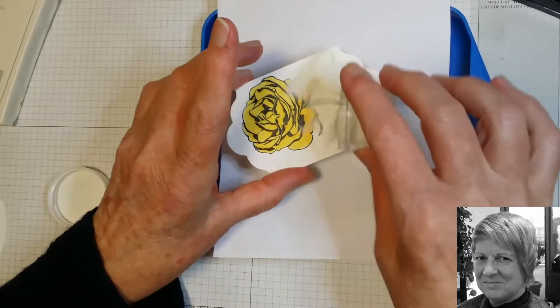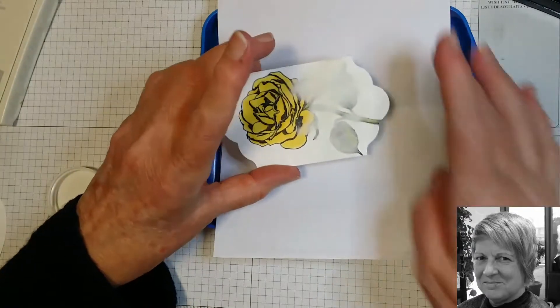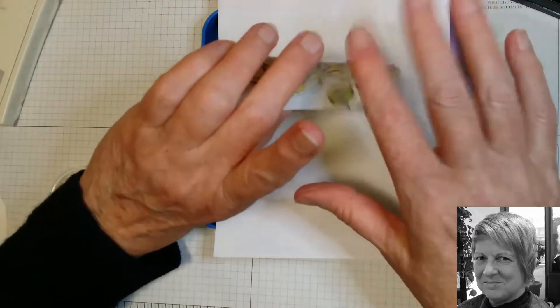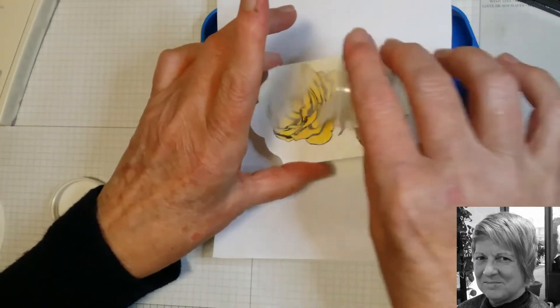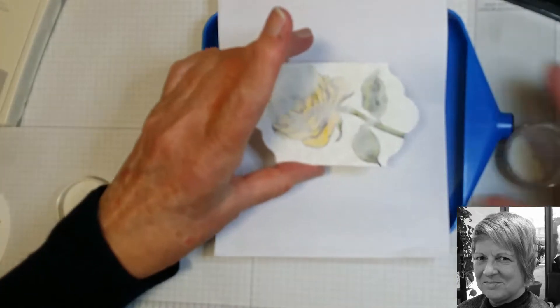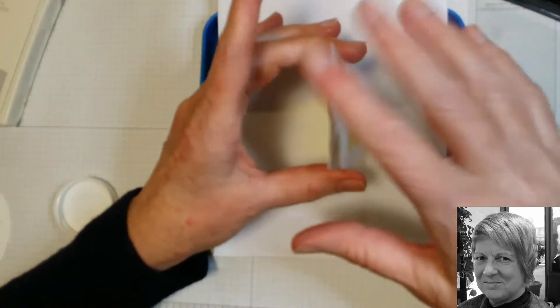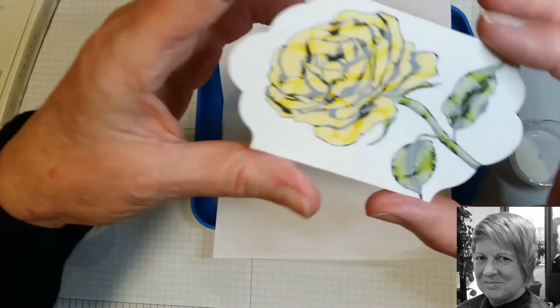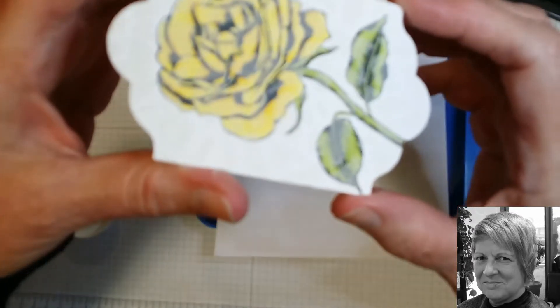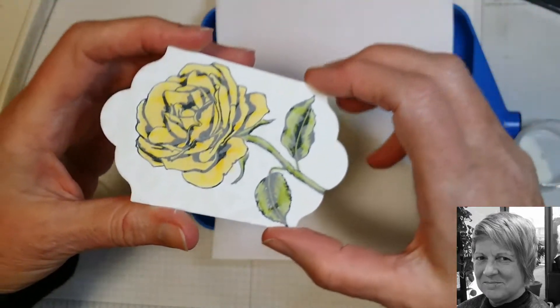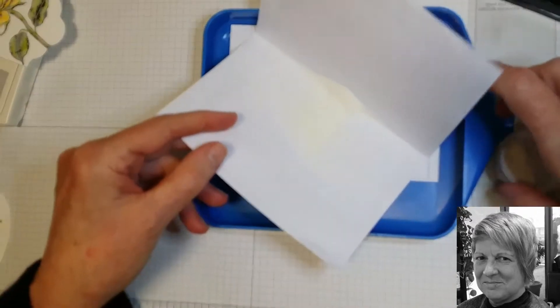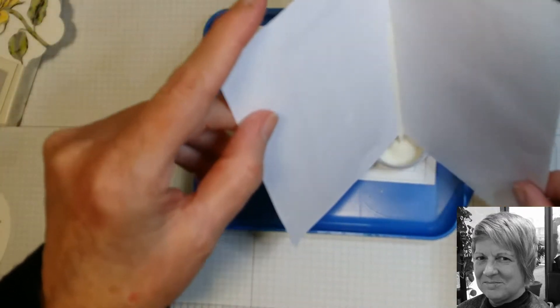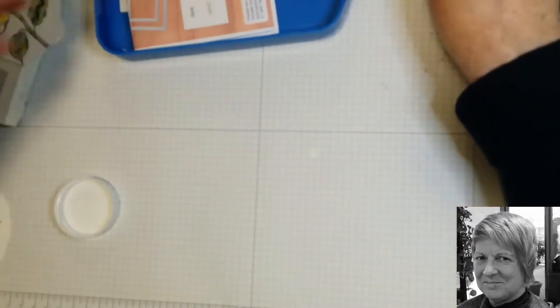We're just going to use clear embossing powder, and I always make sure that it gets a good coating. I'm not sure how well you can see it all on there.